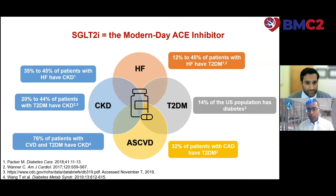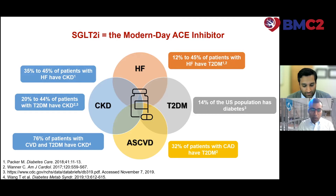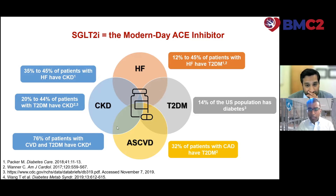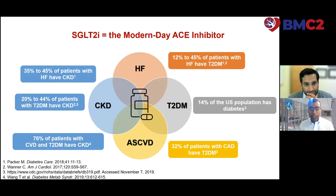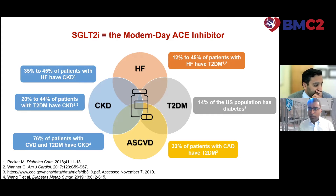In many ways, SGLT2 inhibitors have firmly become established as the modern-day ACE inhibitor in terms of the spectrum of efficacy and safety. Many individuals have overlapping cardiorenal metabolic conditions, such that individual therapies — while we often consider them heart failure, diabetes, or CKD therapies — may simultaneously influence different clinical pathways. Contemporary management of heart failure with reduced ejection fraction almost entirely overlaps with contemporary management of chronic kidney disease.